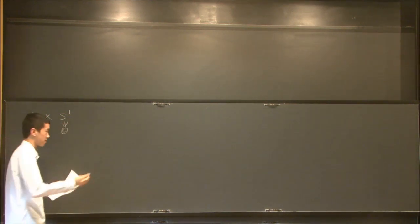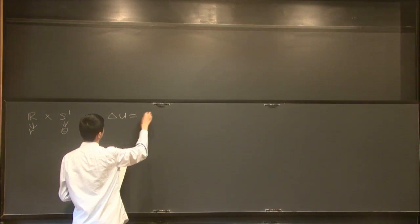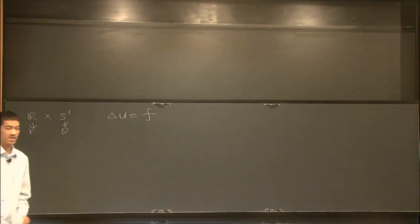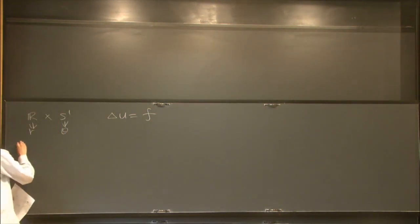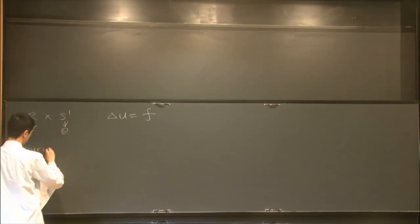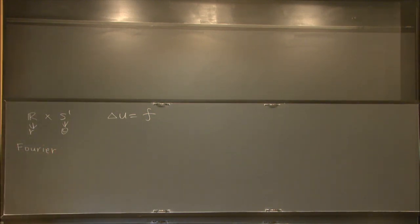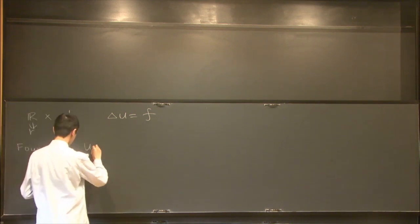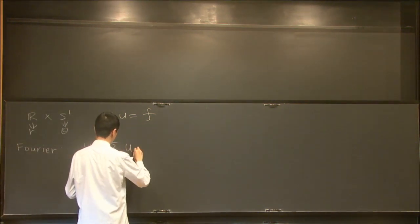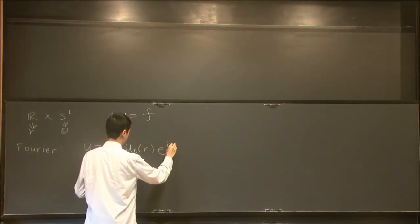We want to study the equation Laplacian U equal to F. The key idea, which goes back to Fourier, is the separation of variables. He writes U as sum of U_n(r)e^{inθ}.